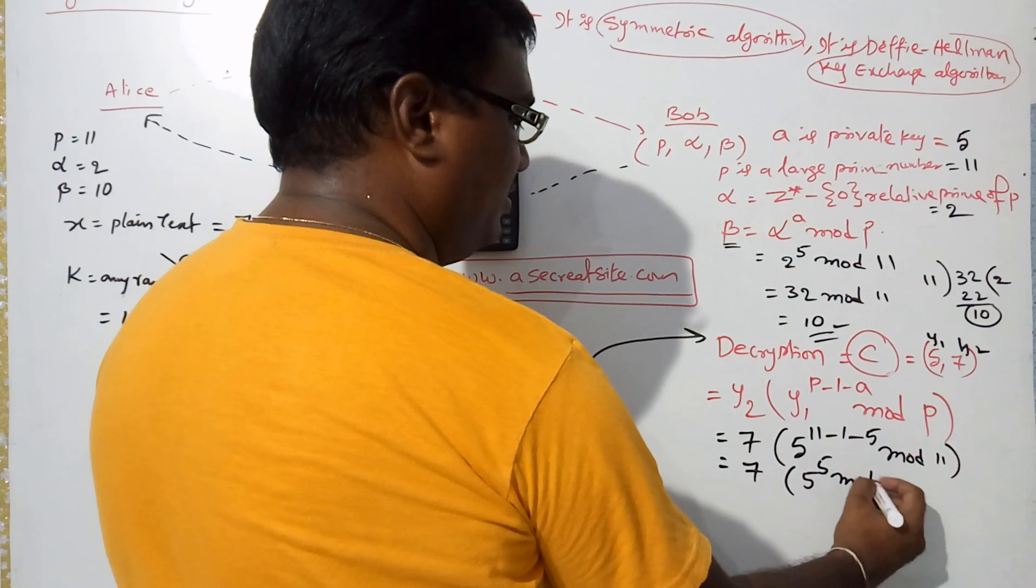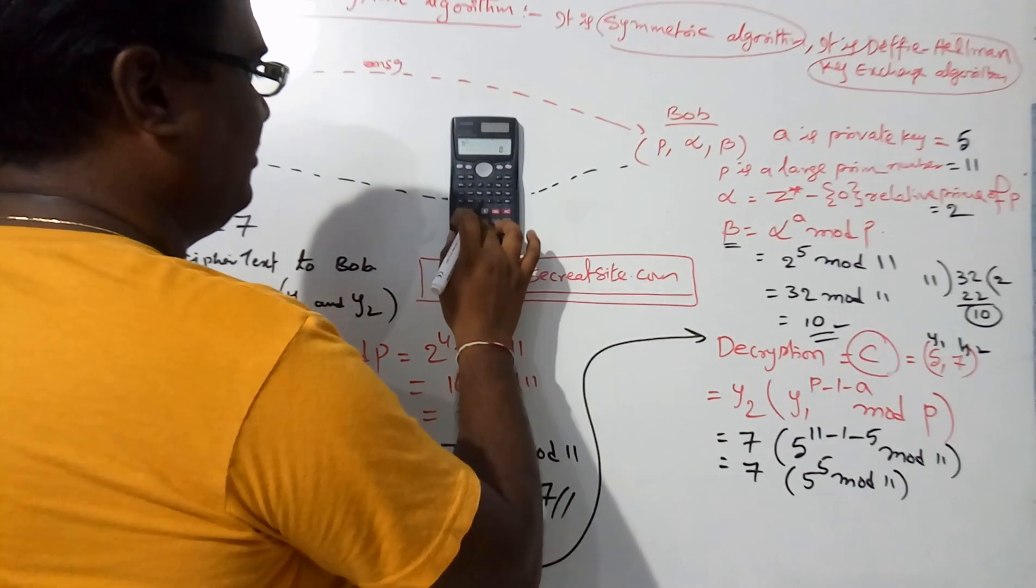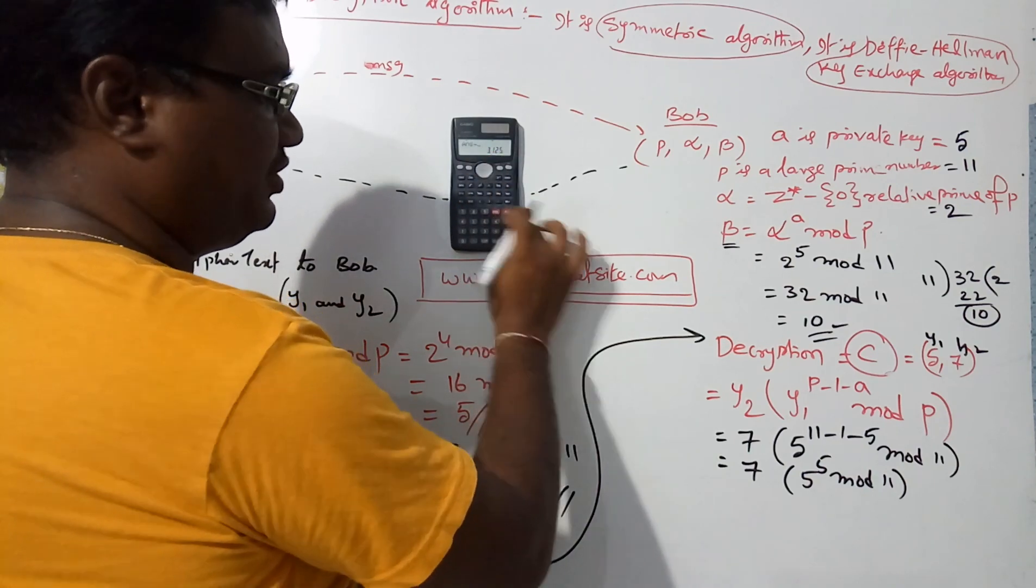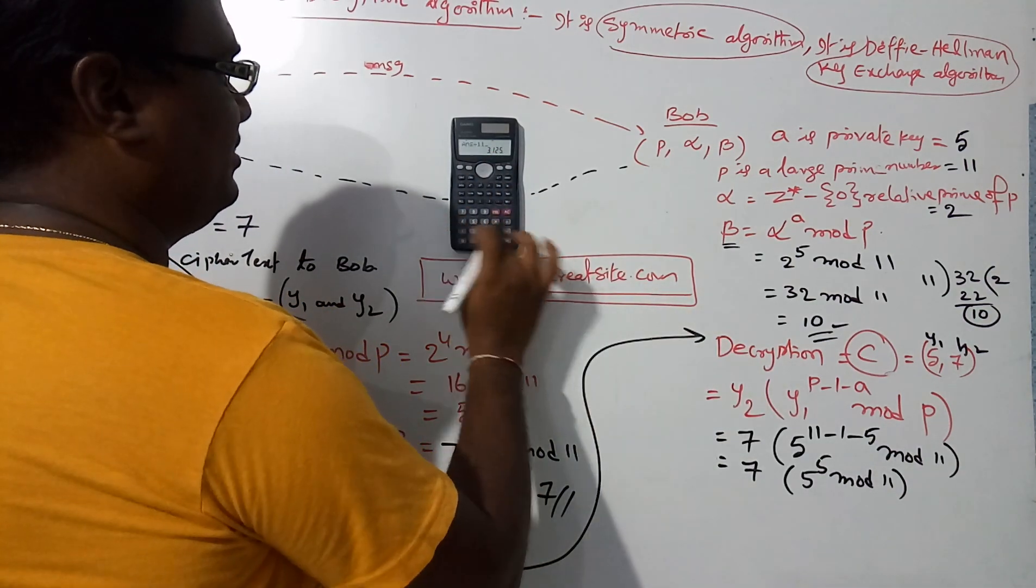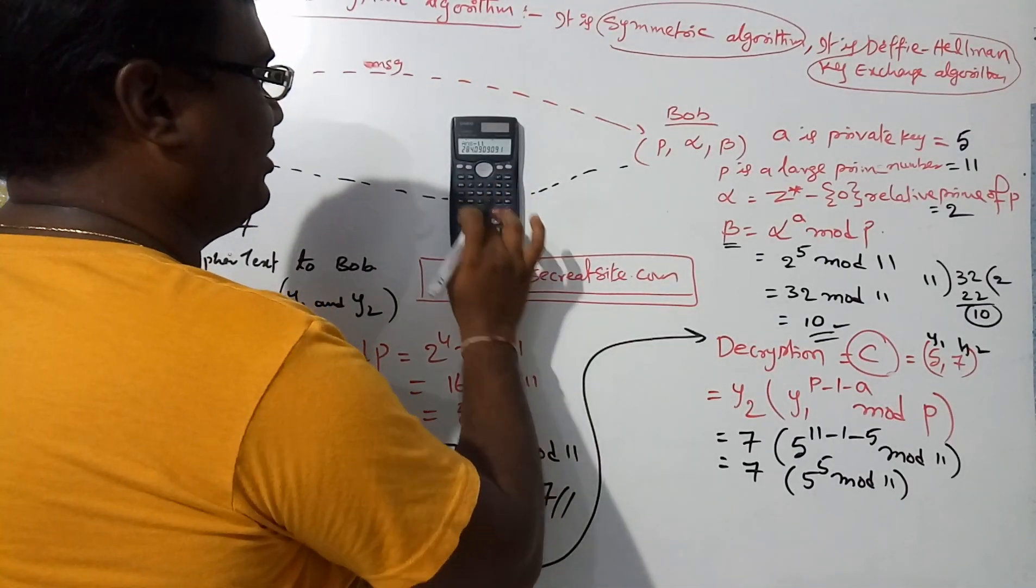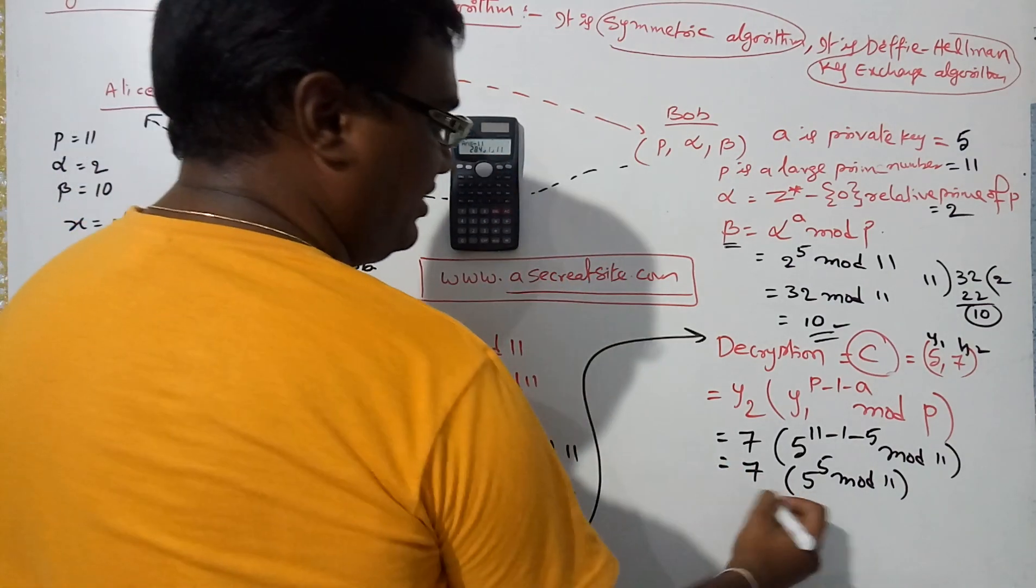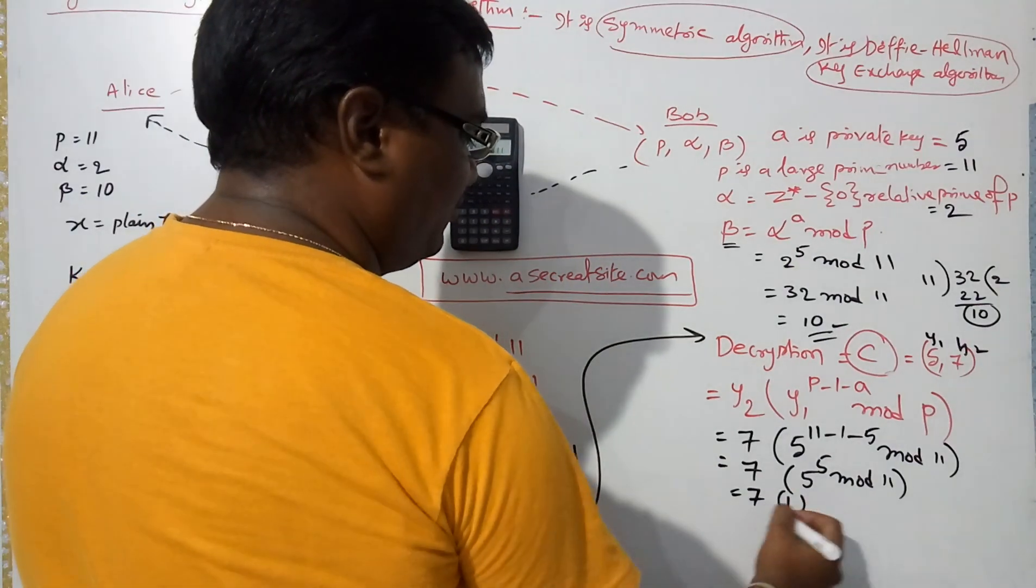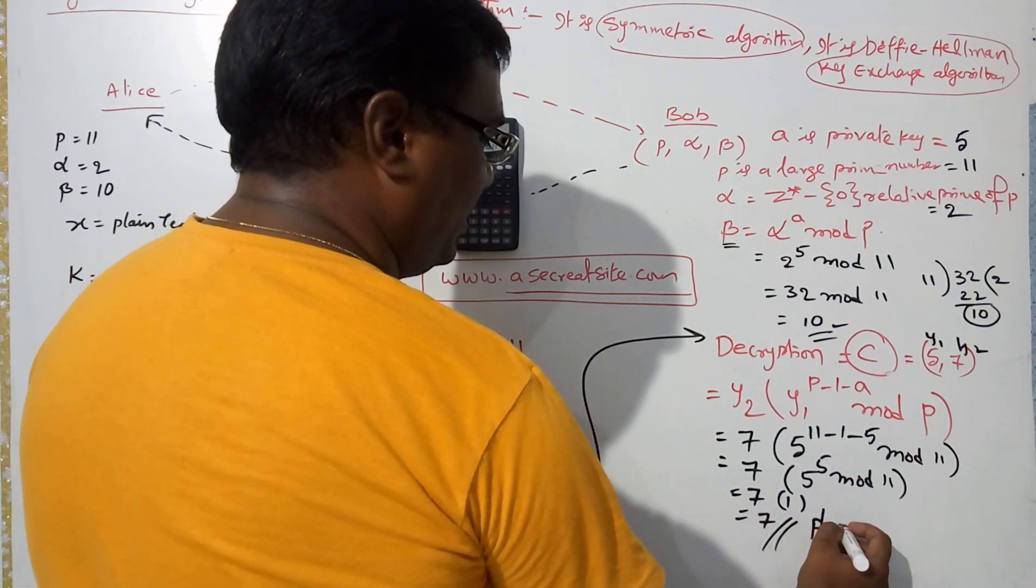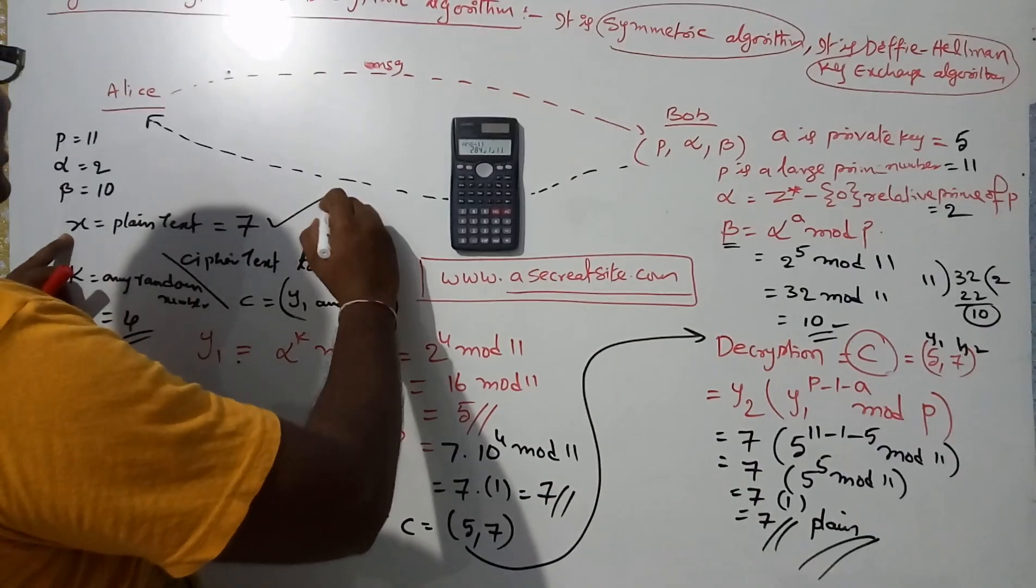5 power 5 equals 3,125. You divide by 11, which equals 284.09. You simply press a divided by b, but the remainder digit equivalent value is 1. So 7 into 1 equals 7. This is the original plaintext.